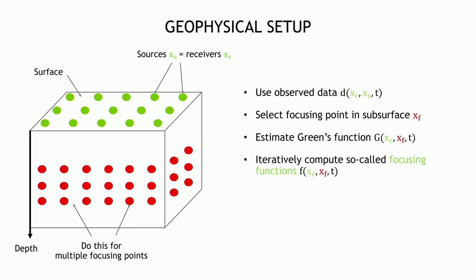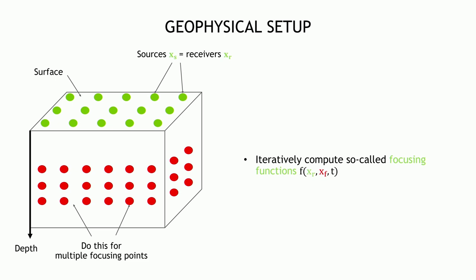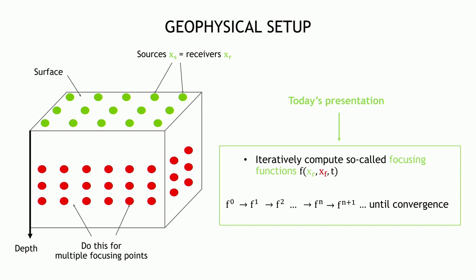With enough focusing points you're able to recover the Marchenko image. For a given focusing point, you start with an initial focusing function and iterate until convergence, at which point you can retrieve the Green's function. The talk is about how we go from f(n) to f(n+1) and how we optimize this on GPU.